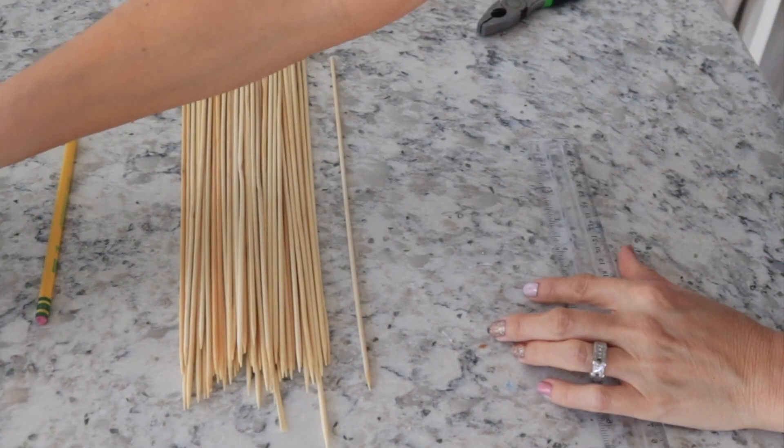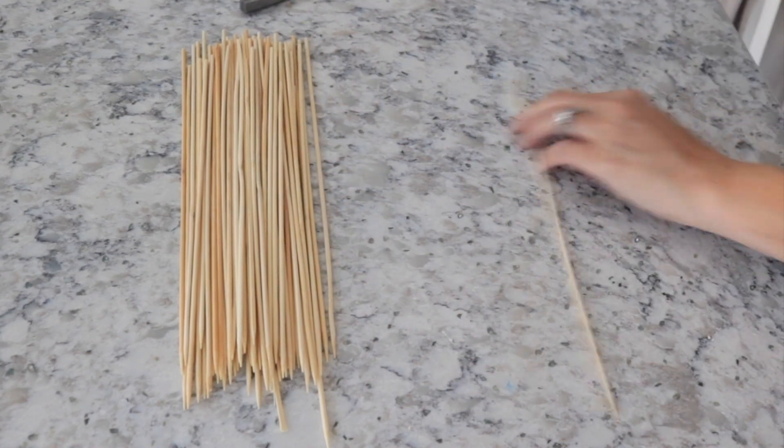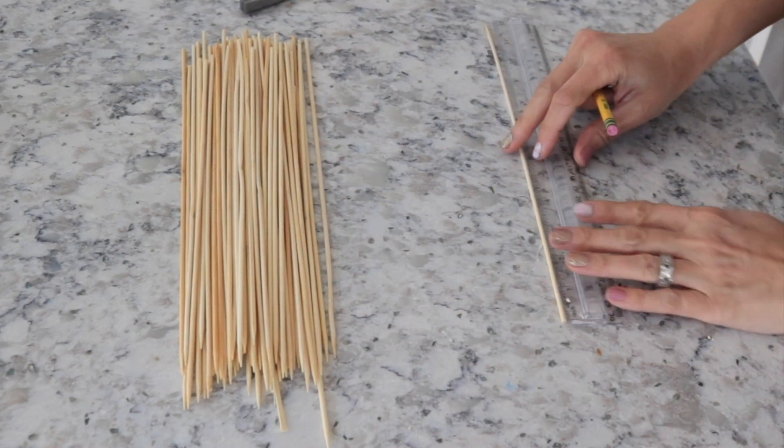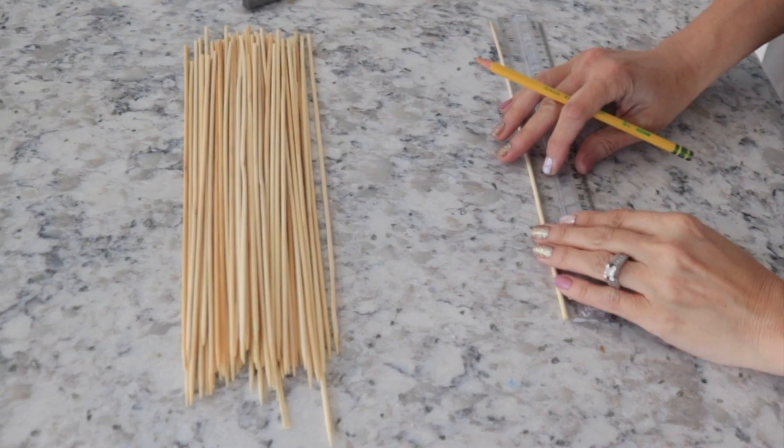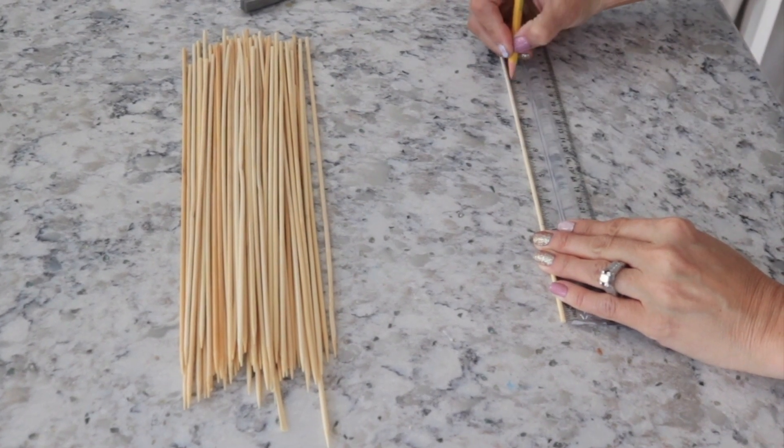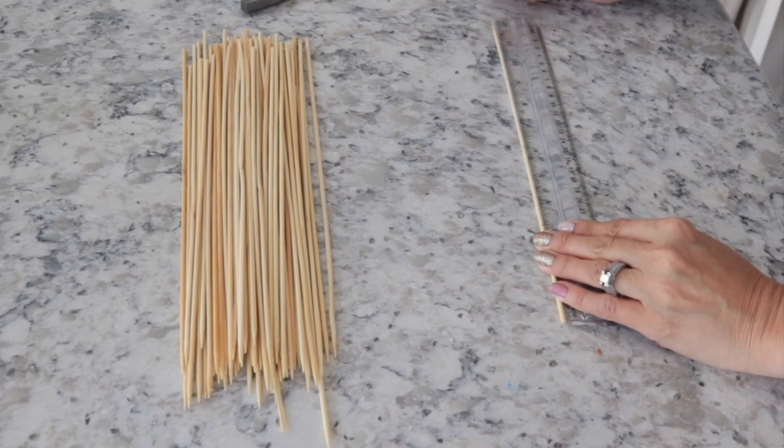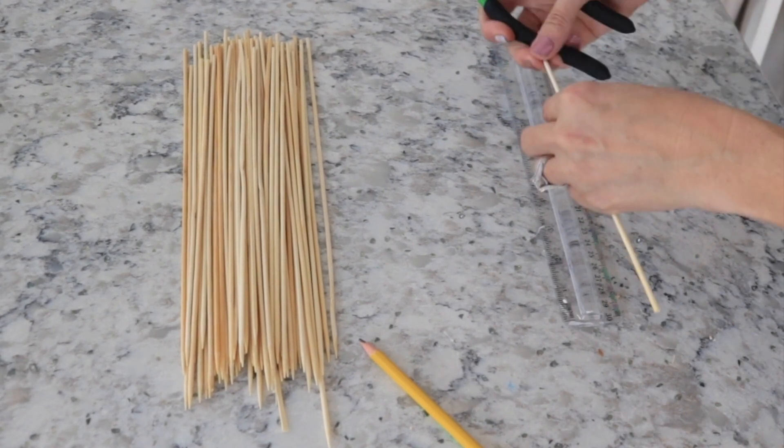All right, for this next one we are using these little bamboo skewers again, and we are going to need 24 three inch pieces and then 36 two and a half inch pieces. So that's what I'm doing right now is just marking those off with my ruler. So you're just going to go through, mark those off, make sure you have as many pieces as I said, and then we will go from there.